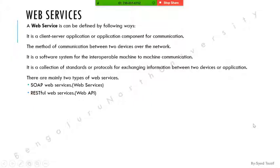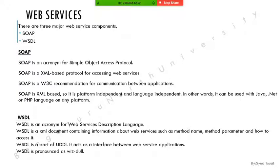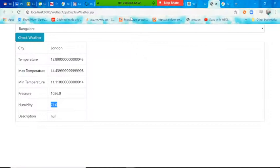In this presentation, if I say 'web services' it means SOAP; if I say 'API' it means RESTful services. Web services — SOAP — have two major components: SOAP itself, which is the actual service, and WSDL — Web Service Description Language. WSDL gives the complete description of a web service. Let me show you on the internet what WSDL looks like.